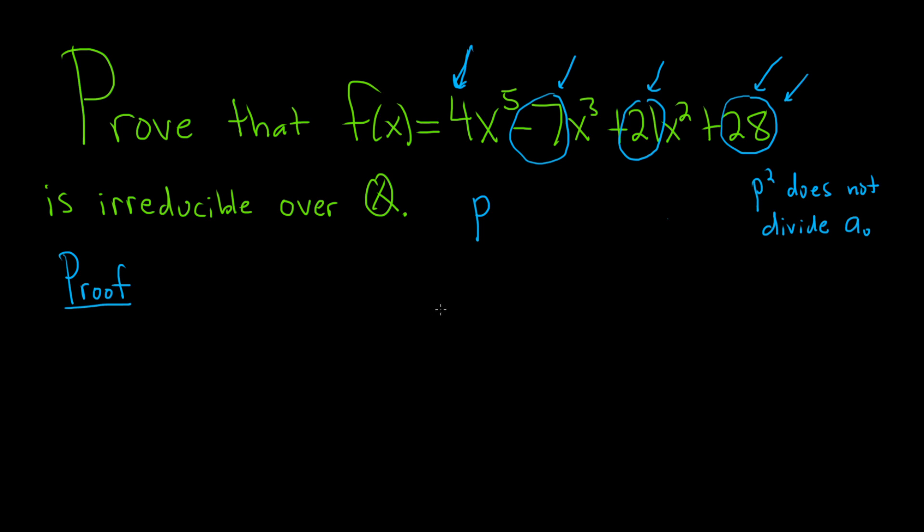So it's such a big deal that it has its own name. It's called Eisenstein's Criterion. So it's a really big thing in abstract algebra.